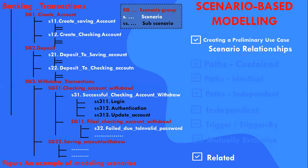A scenario may be risky if it contains software components with a high probability of failure or whose failure may cause serious consequences, or if it has a condition with a high probability of failure or whose failure can cause a serious consequence. These relationships can also help for dependency analysis such as execution dependency, condition dependency, and regression testing.